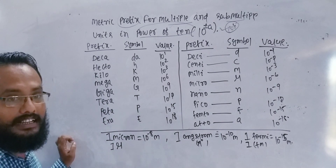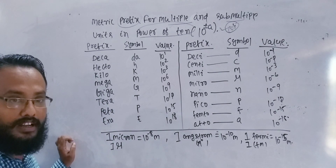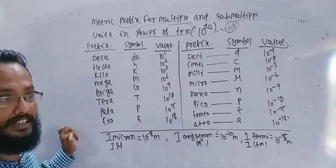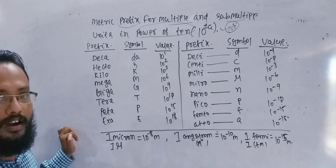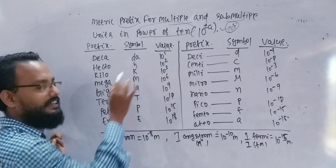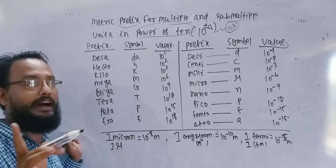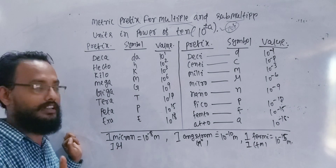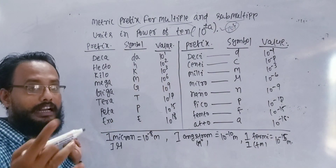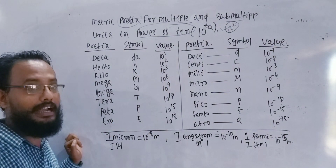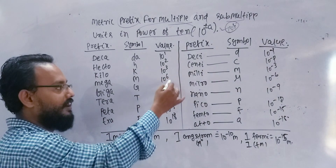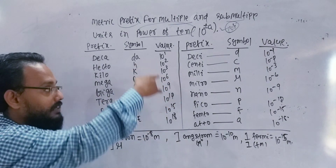Kilobyte, megabyte — this is the information in your computer or mobile. Kilo means 10 to the power 3, so kilobyte means 10 to the power 3. Megabyte means 10 to the power 6 of information.